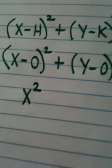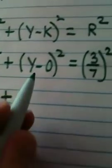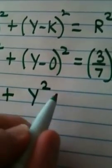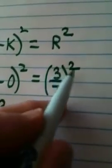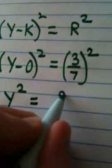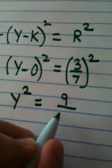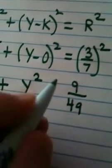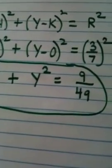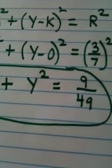So it's a matter of plugging in. X minus 0 is X, so this just becomes X squared. Plus Y minus 0 is Y, this becomes Y squared. And when you're squaring a fraction, you know to square the top and the bottom. 3 squared of course is 9, 7 squared is 49. That is my equation of the circle: X squared plus Y squared equals 9 over 49.